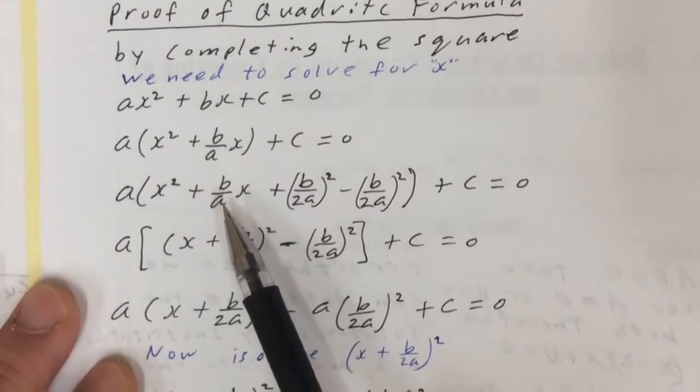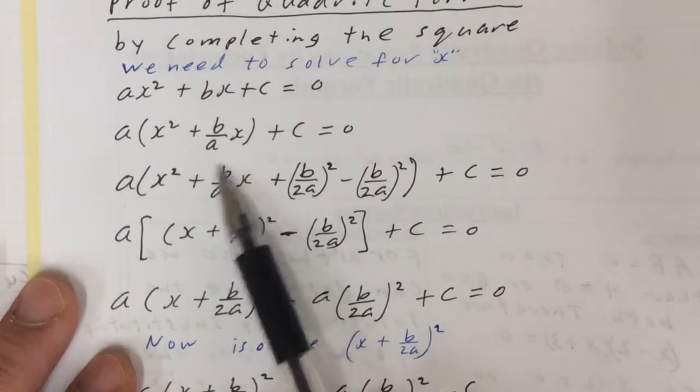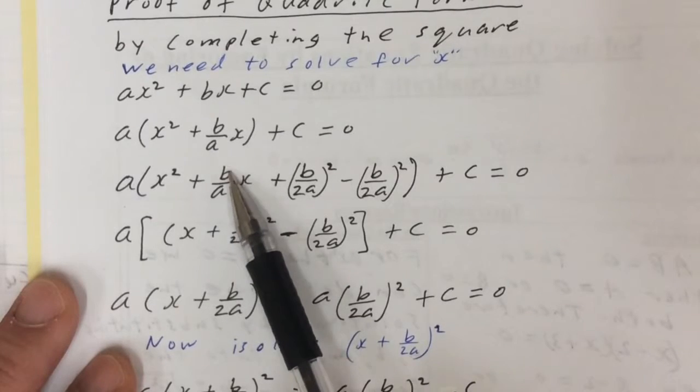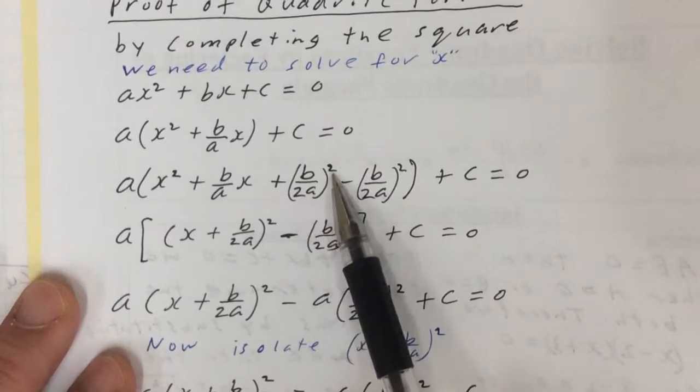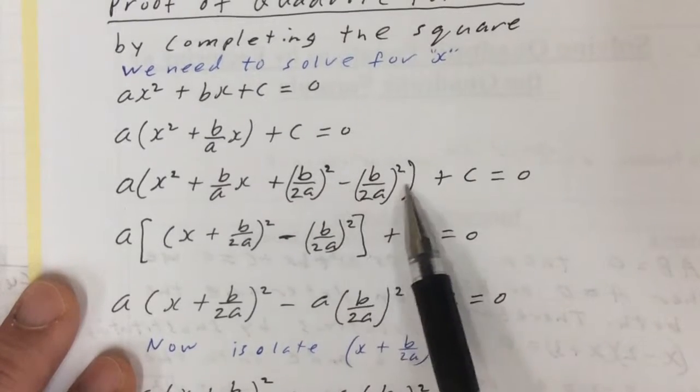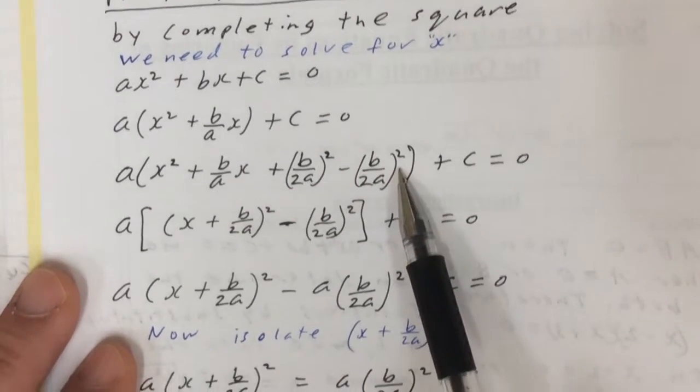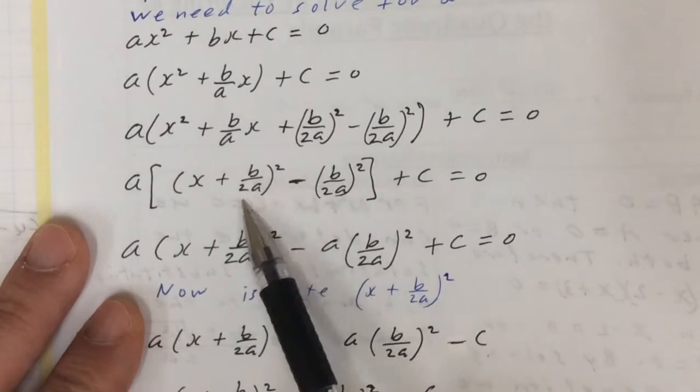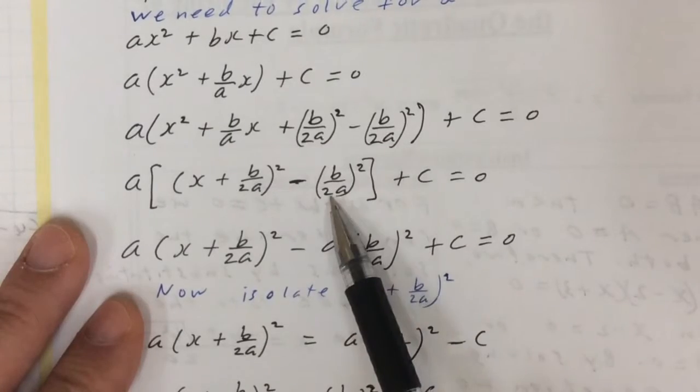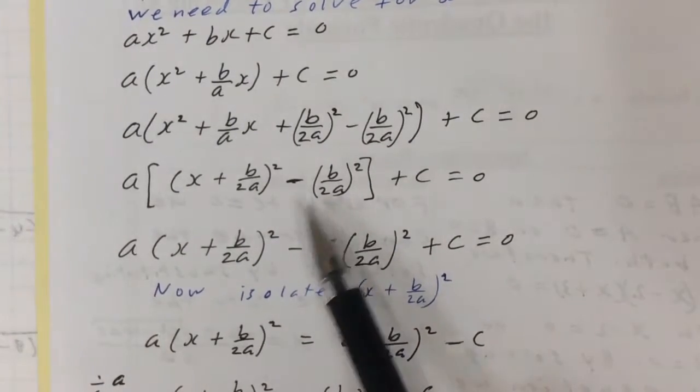Then you want to find the perfect square in there. So you take half of this and square it. So b over a, half of that is b over 2a. Square that, add it, and subtract it. Now you have a perfect square in these three terms, and you can write that down. And you have this piece left over.